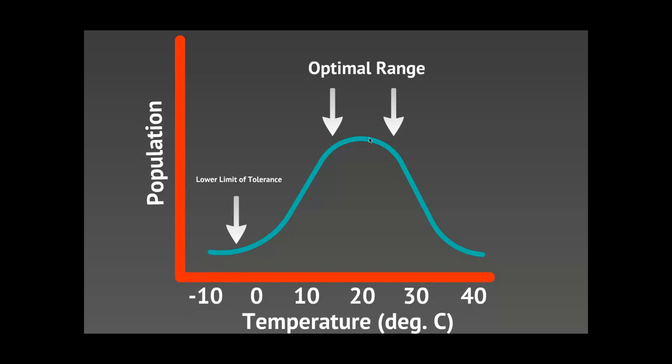And then on the two ends over here you have what we call the limit of tolerance. Over here this is called your lower limit of tolerance. And this is your upper limit of tolerance. And this is as far as that species can survive into the too far hot or the too far cold range. Or it could be too wet or too dry. It could be too bright or too dark. Any environmental factor that you put on this x-axis down here.